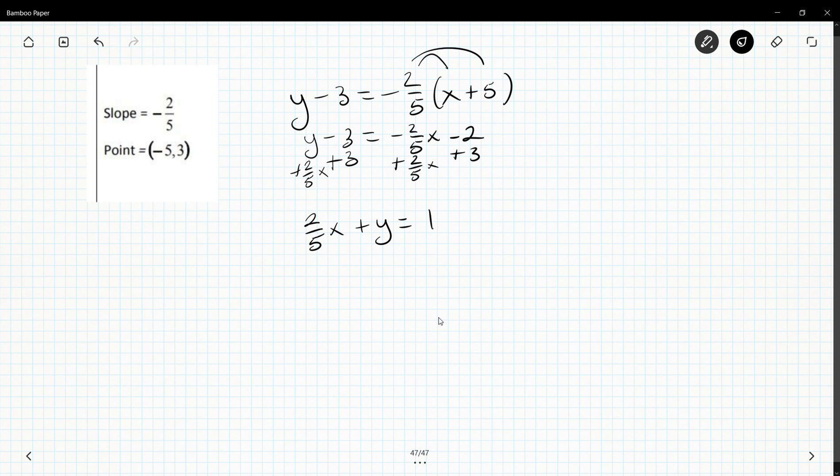I don't want to have 2/5, so I'm going to multiply everything by 5. 2/5 times 5 is 2x, so 2x plus 5y equals 5. This is in standard form.